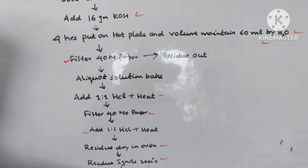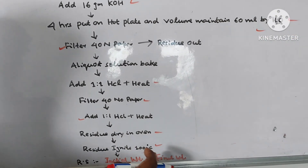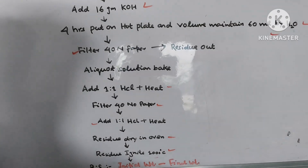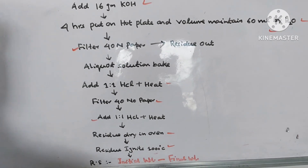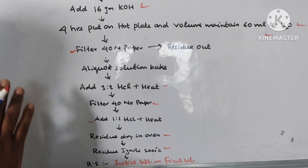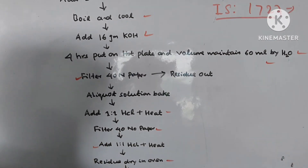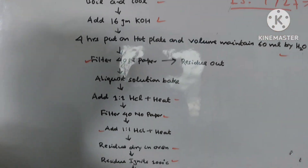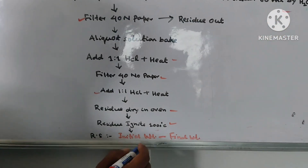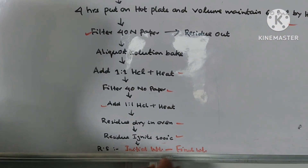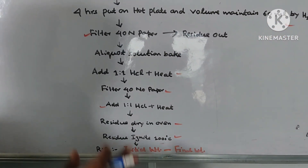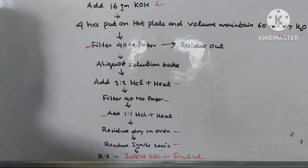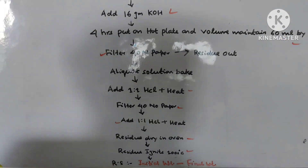Then ignite the residue at 1000 degrees centigrade temperature. And finally, the result: reactive silica equals initial weight minus final weight. This is the determination of reactive silica of fly ash.